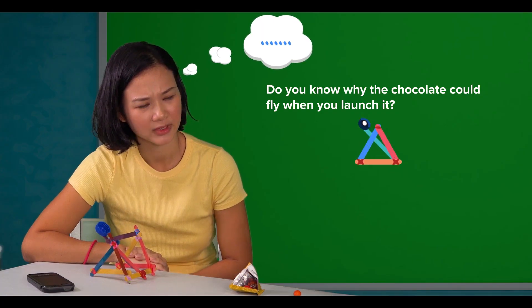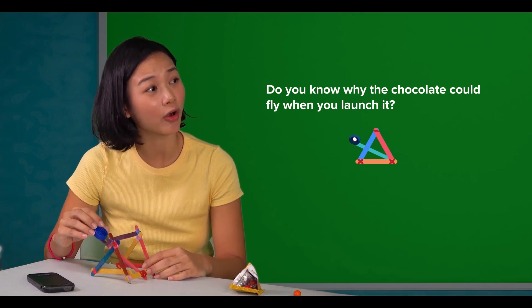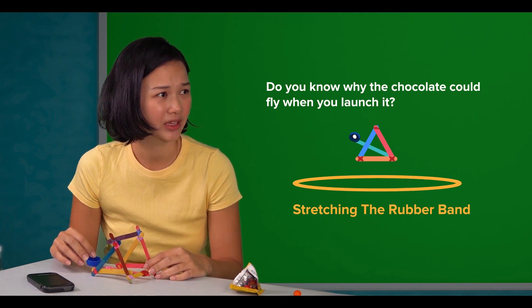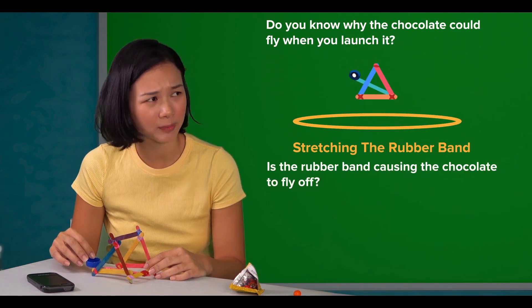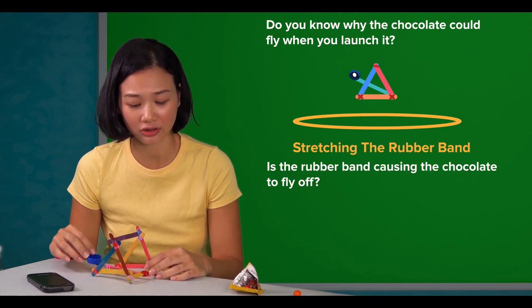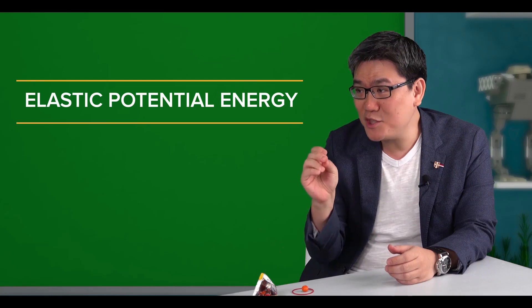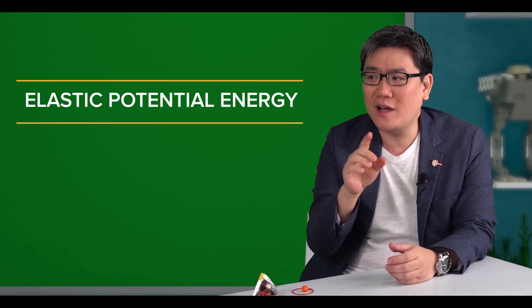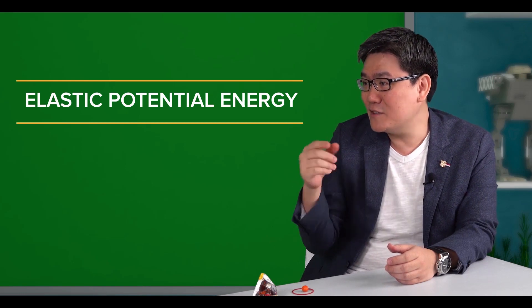Hmm... I know when I pull the shooting arm all the way to the back, I am stretching the rubber band. Is it the rubber band that is causing the chocolate to fly? Yes! In fact, you are using the elastic potential energy stored in the rubber band to transfer energy to the chocolate that allows it to be shot out from the basket.